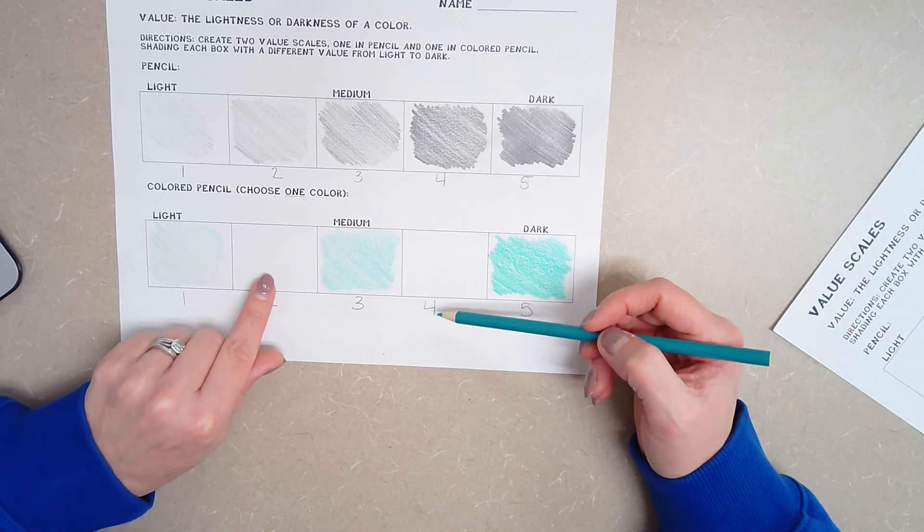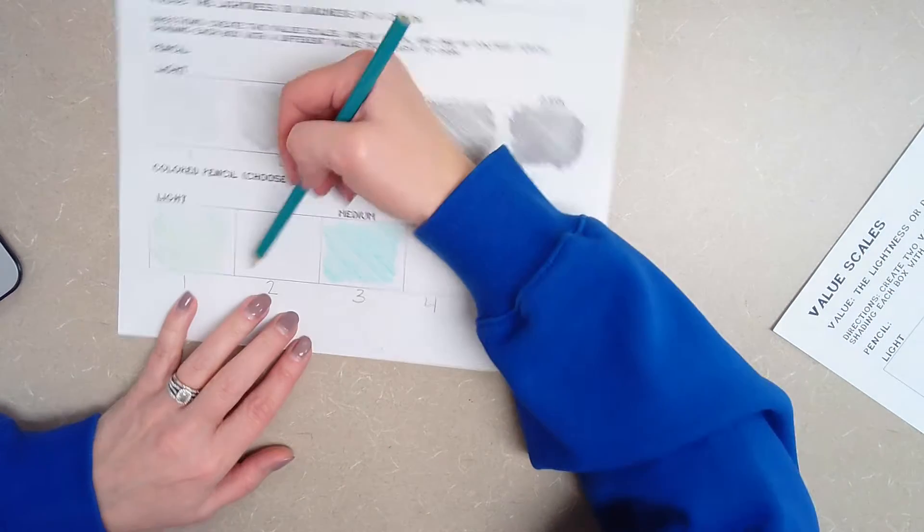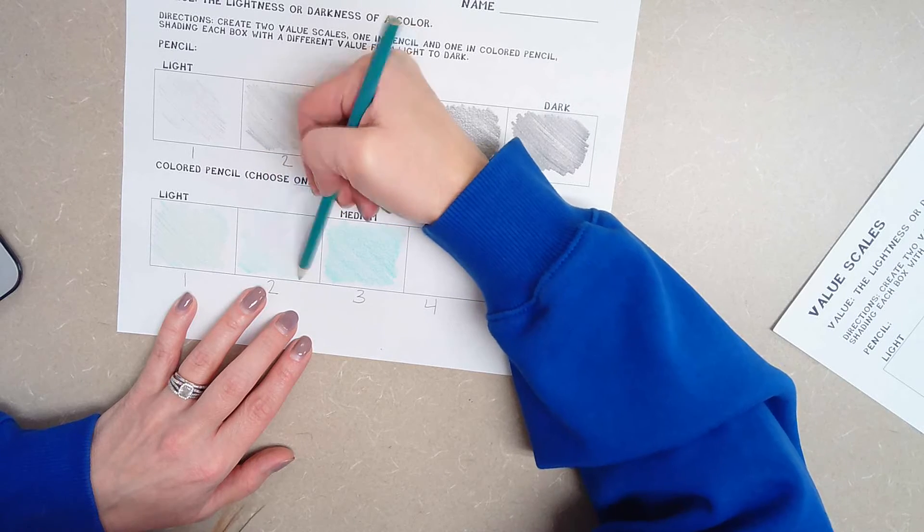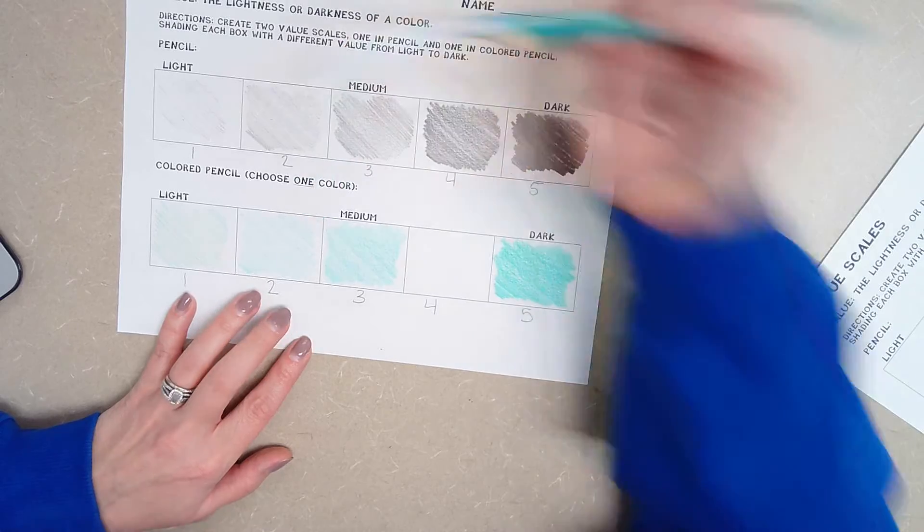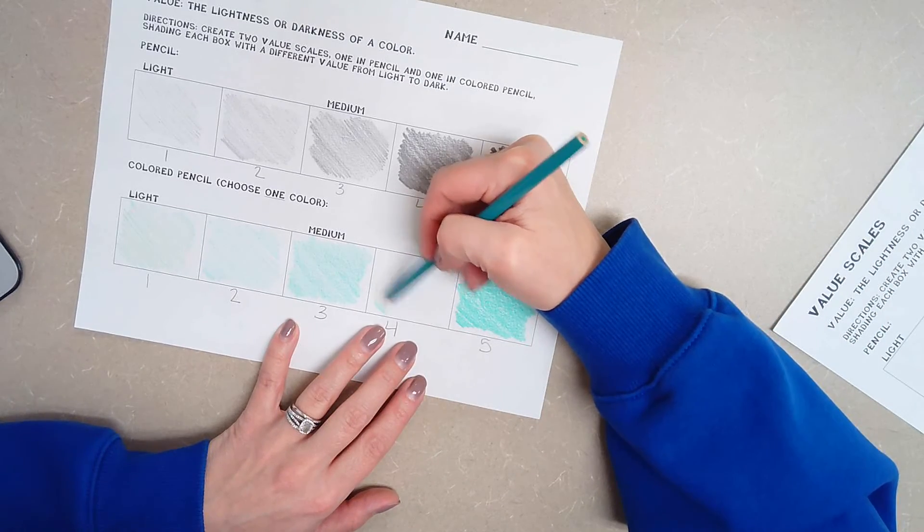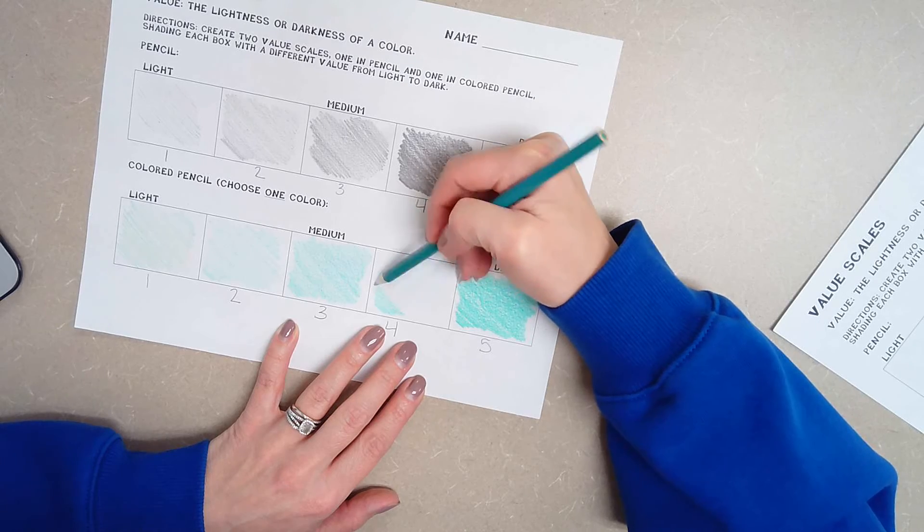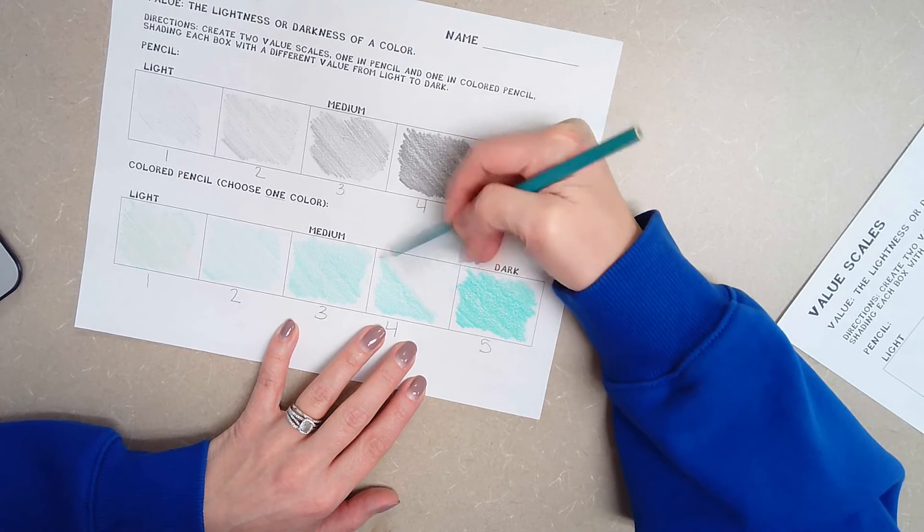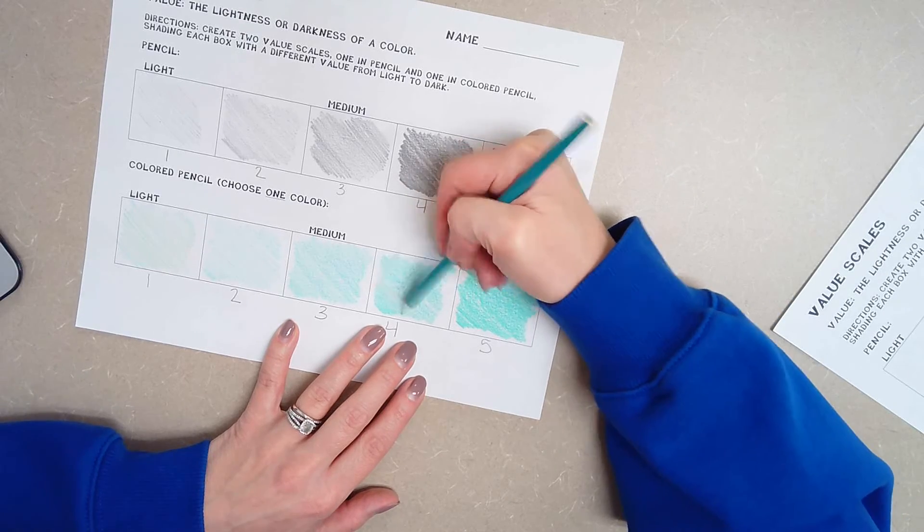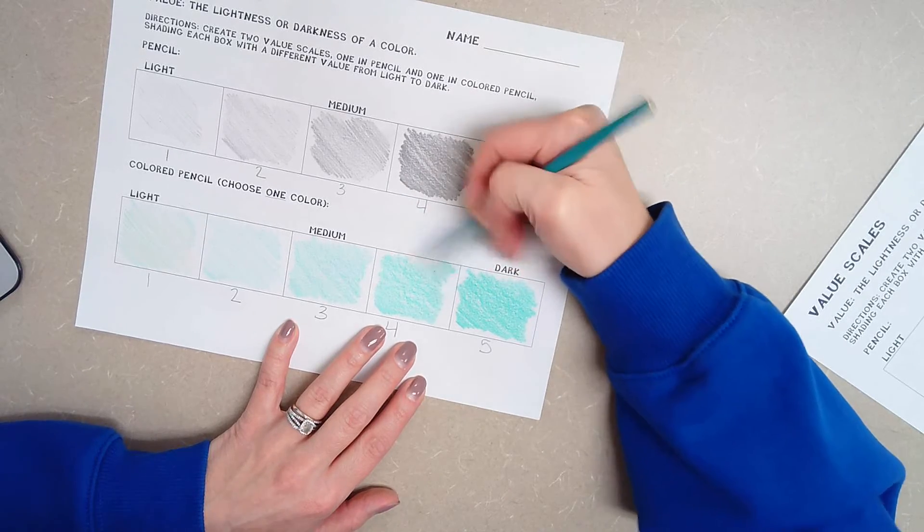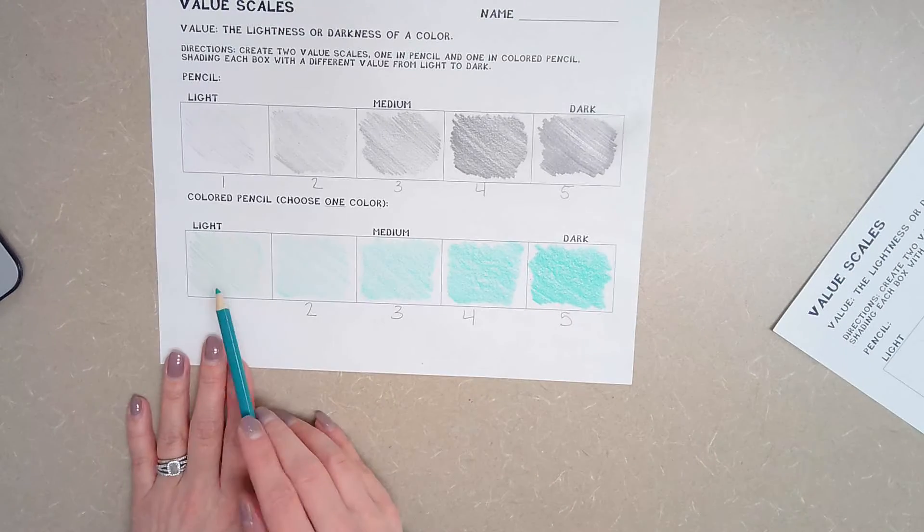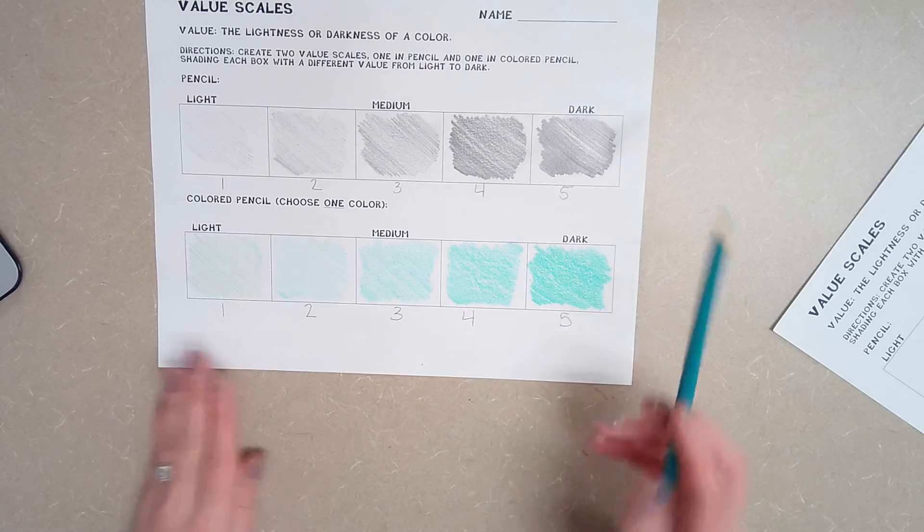And then again, I have to do my two and my four. So I'm going to go over here to the two, press just a tad bit harder than the one. Here we go. And number four, press down pretty hard, but not super hard. Maybe a little bit harder. I think that looks pretty good. So now you can see my value scale using colored pencil.